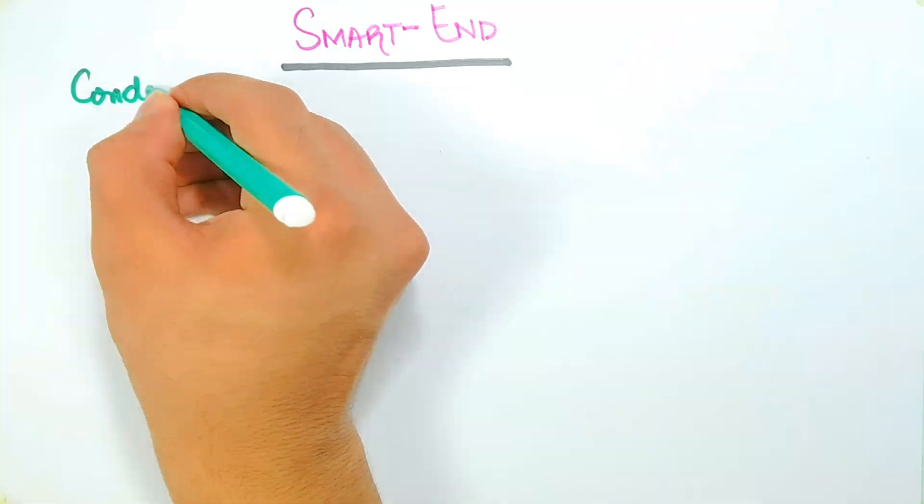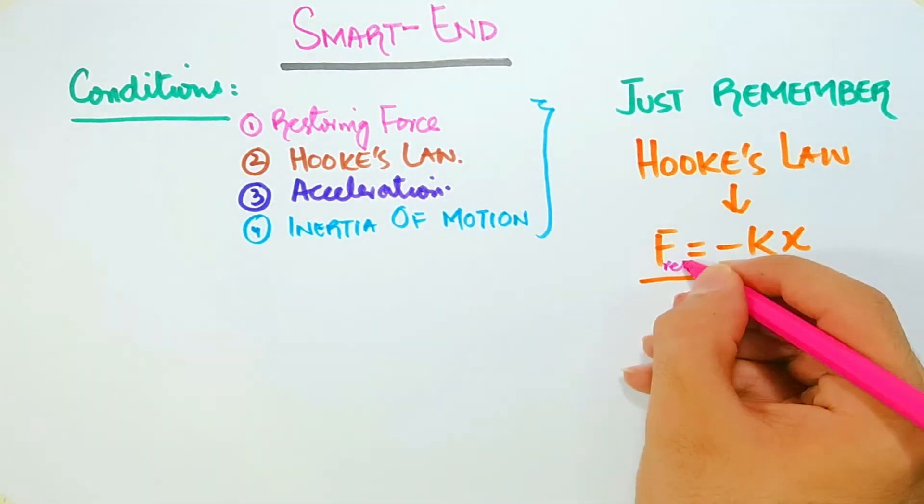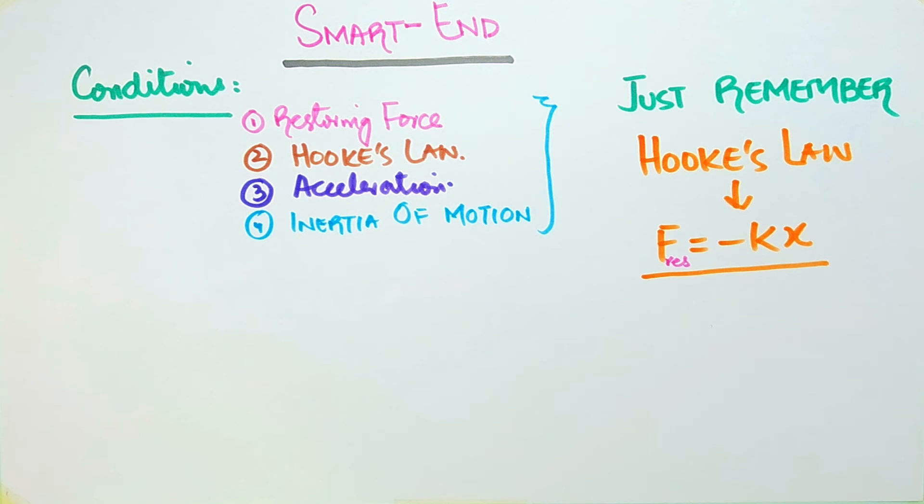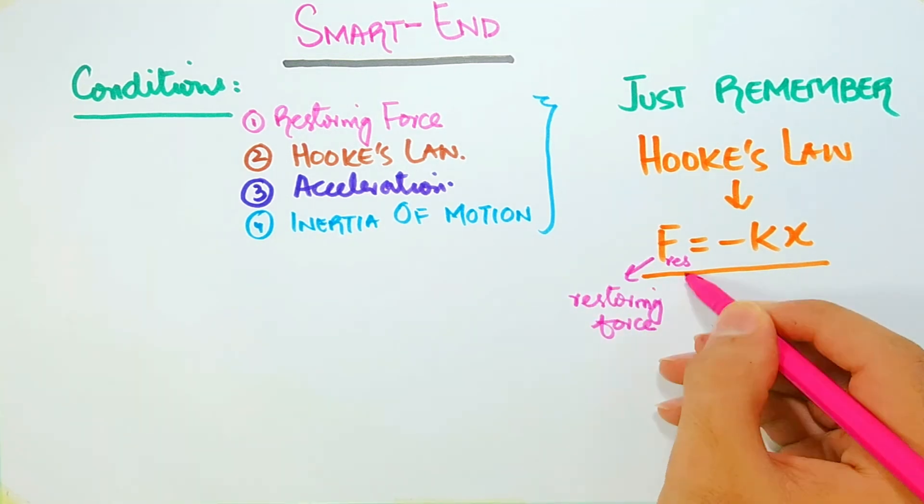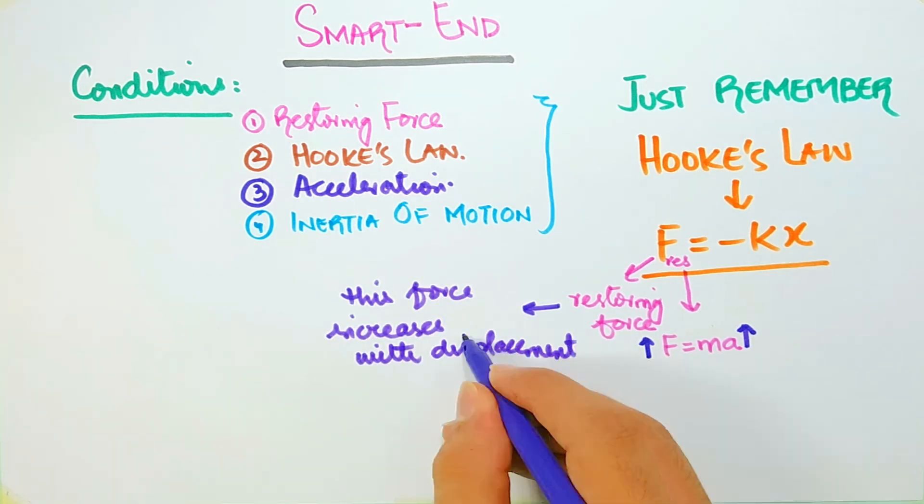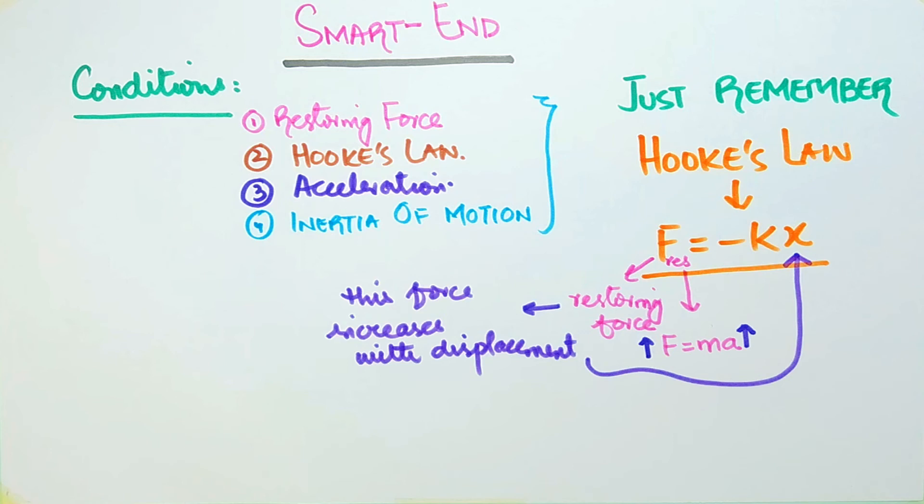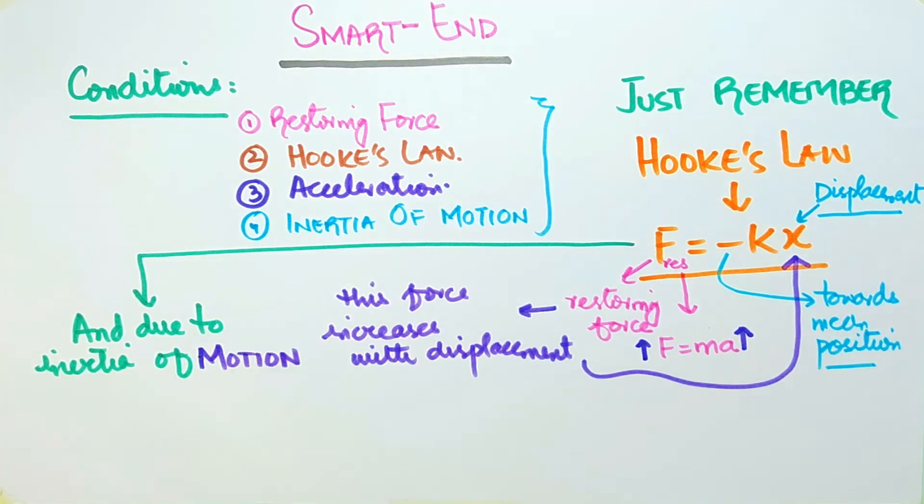Smart End. You can remember these conditions effortlessly by only remembering Hooke's law, that is, F equals minus KX, where the elastic restoring force increases with the increase in displacement from the mean position, also with the increase in acceleration as mass M reaches the extreme position, where the restoring force and acceleration both are in the same direction, directed towards the mean position O. And due to inertia of motion, the mass M does not stop at mean position, which plays a very significant role in the continuous to and fro motion of simple harmonic motion.